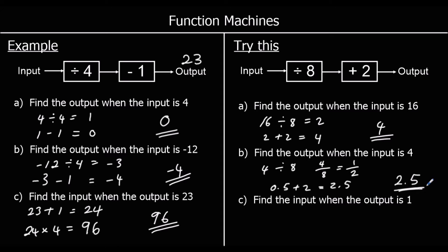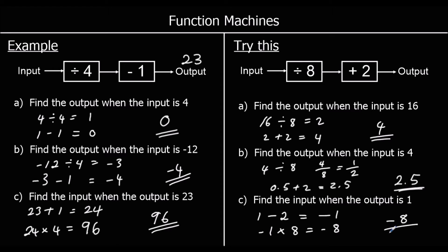Part C: find the input when the output is 1. So we're going to do the opposite and go backwards. Instead of adding 2, we're going to take 2 away: 1 take away 2 is negative 1. And then the opposite of dividing by 8 is multiplying by 8. Negative 1 times 8 is negative 8. So the input must have been negative 8.